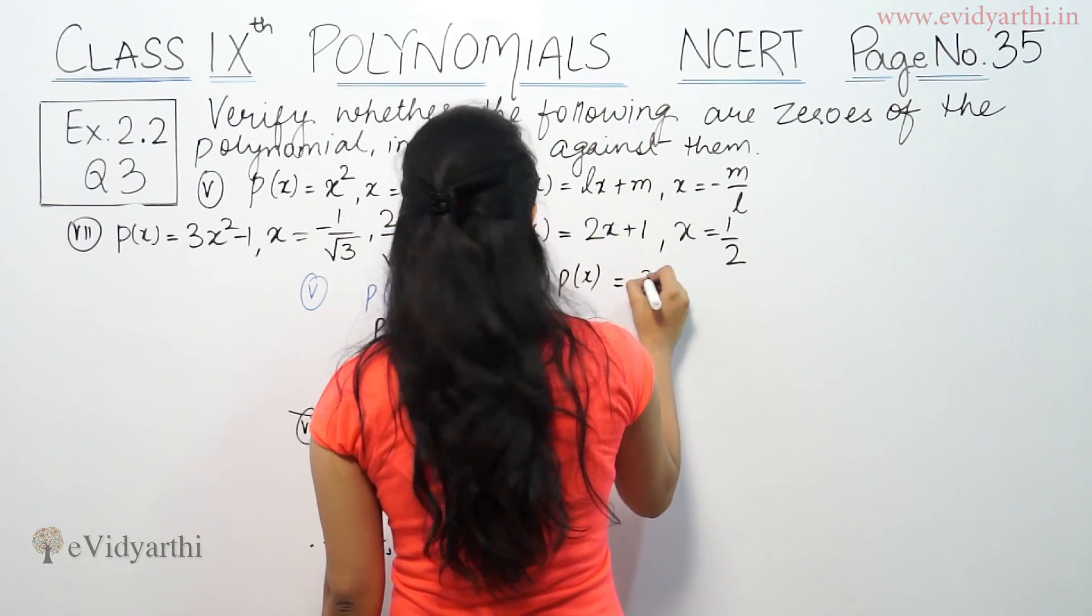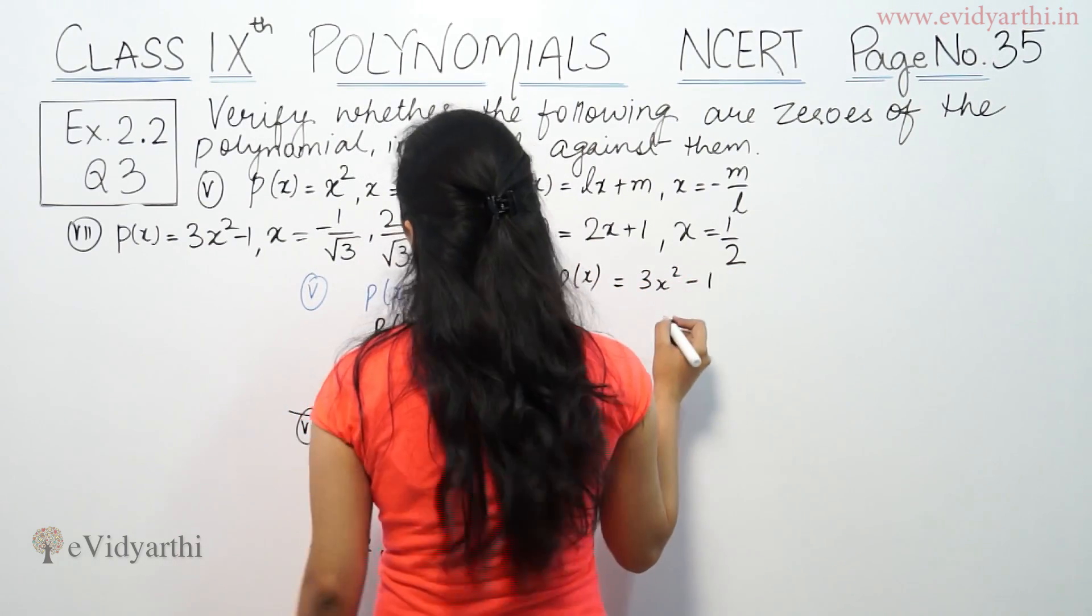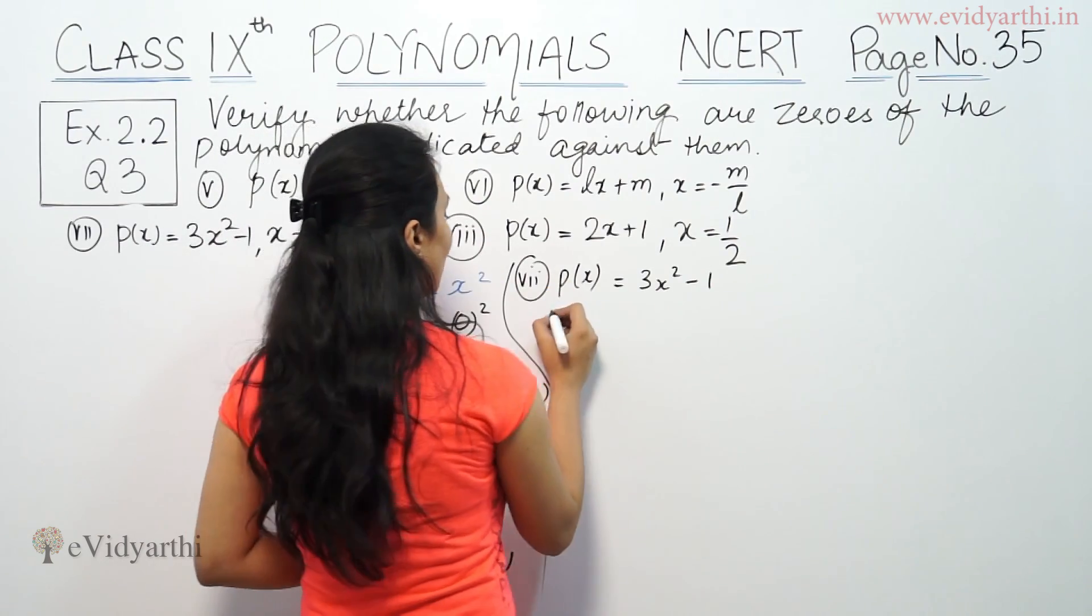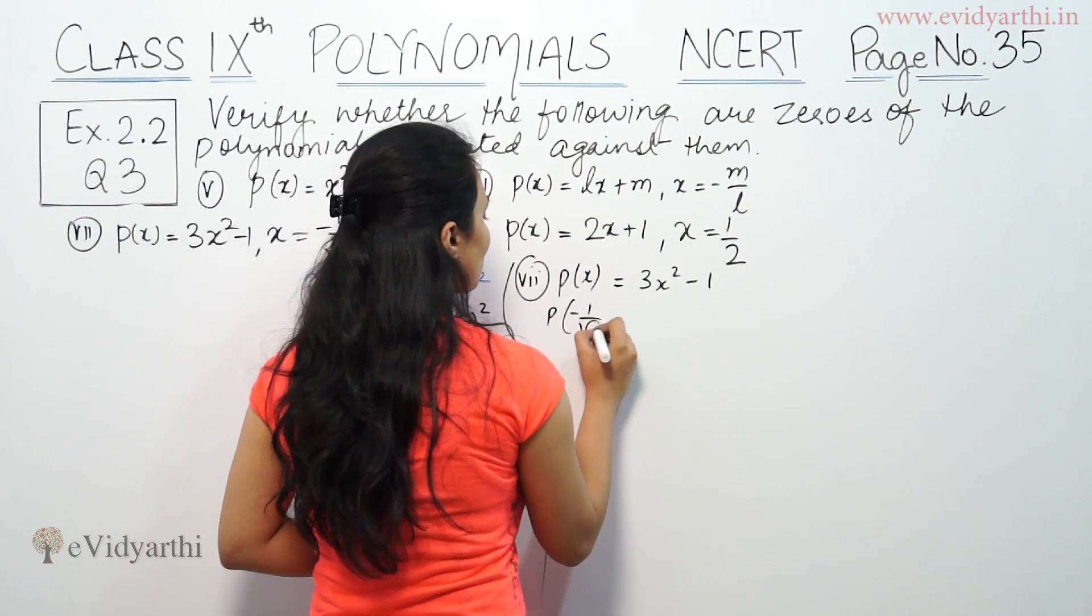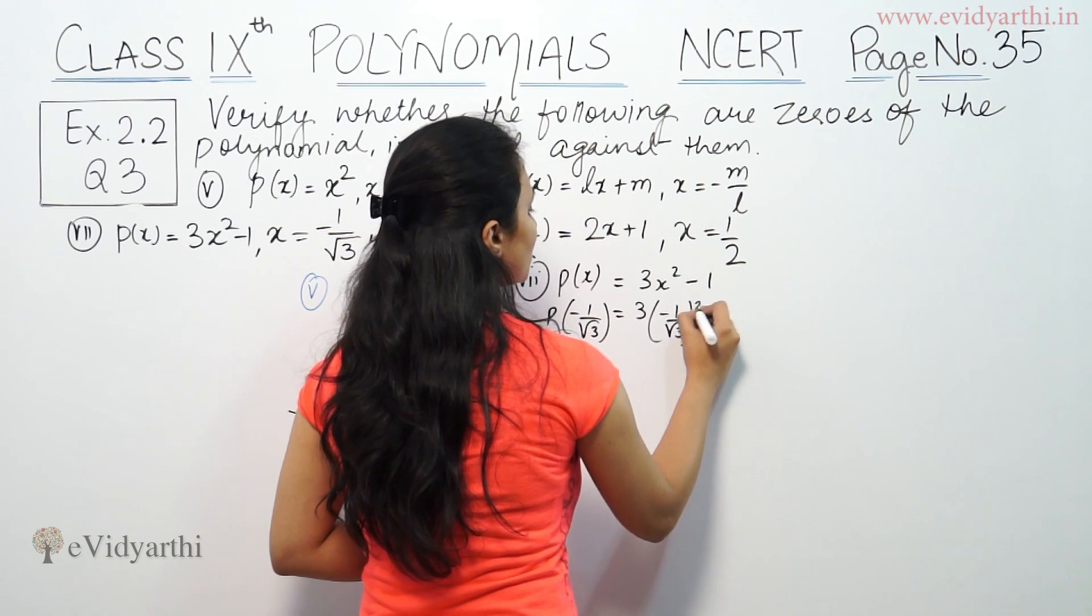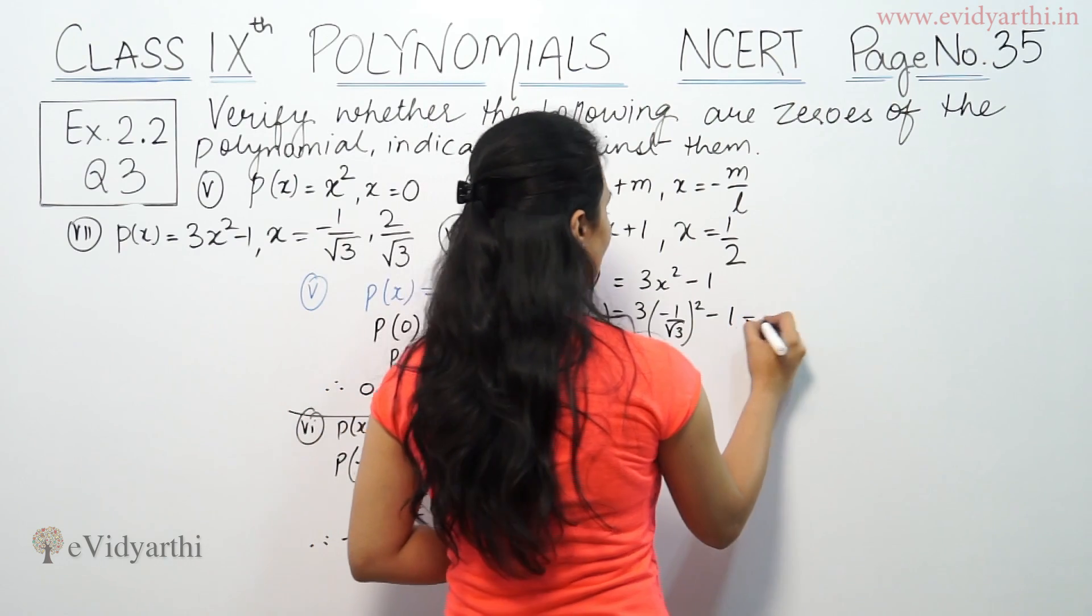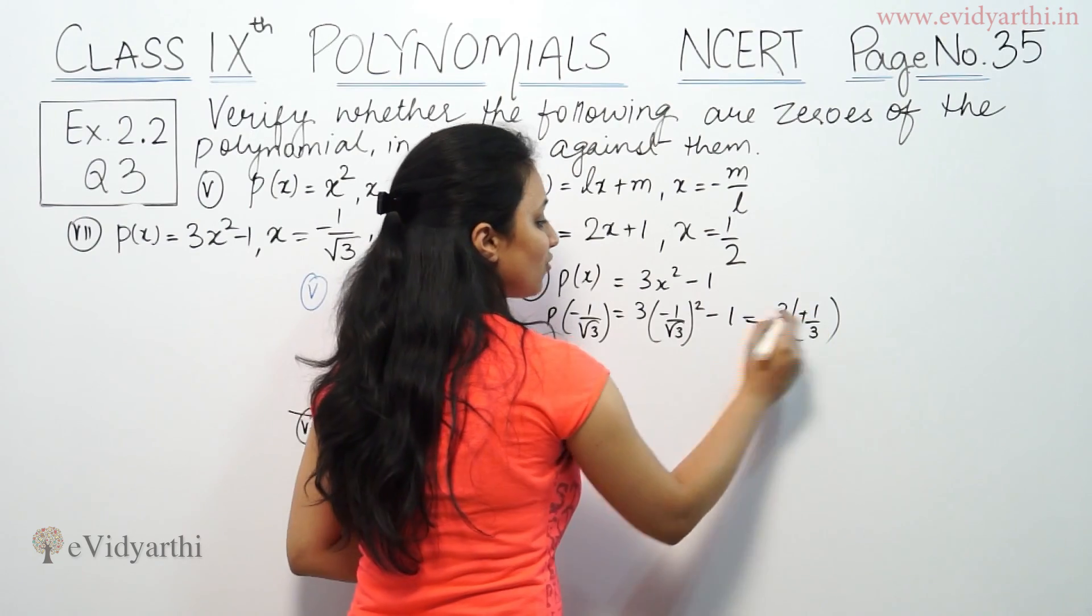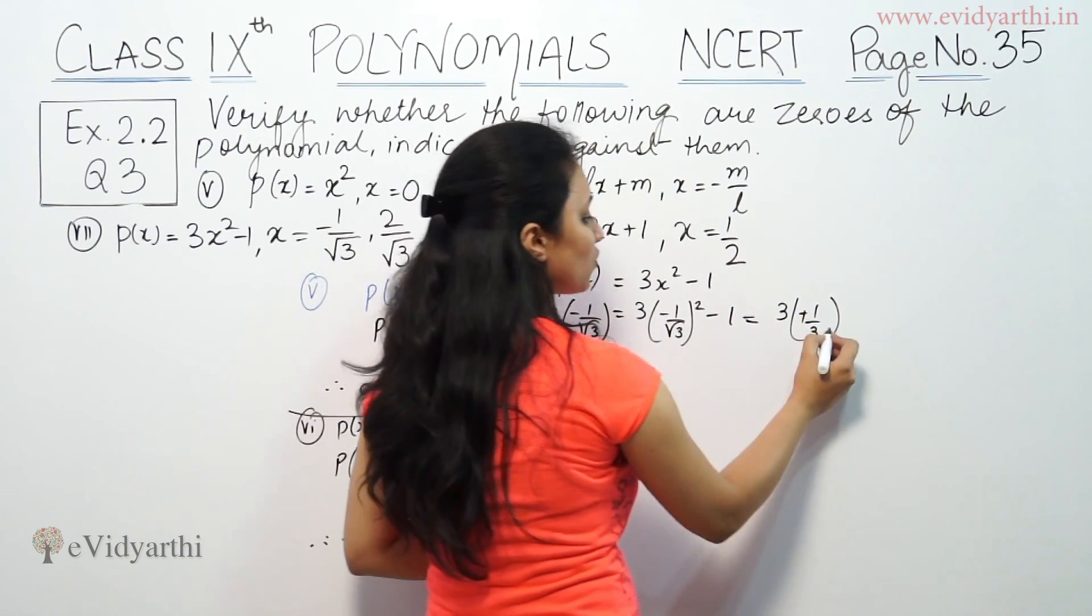Now, P(x) = 3x² - 1. x's value is -1/√3. We have P(-1/√3) = 3(-1/√3)² - 1. That means 3 times, if you square it, minus sign positive will be 1/3, minus 1.